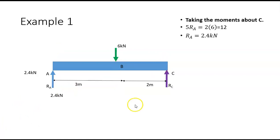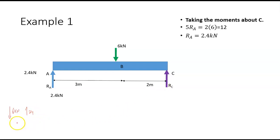Now to calculate Rc, the sum of forces must equal zero. We have six kilonewtons coming down and 2.4 going up, so Rc would be 3.6 kilonewtons.